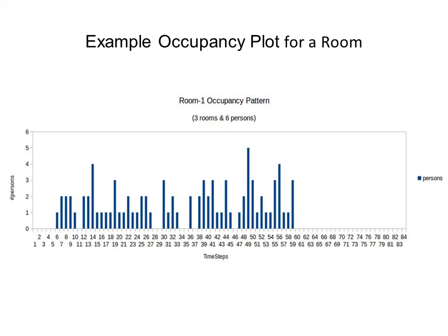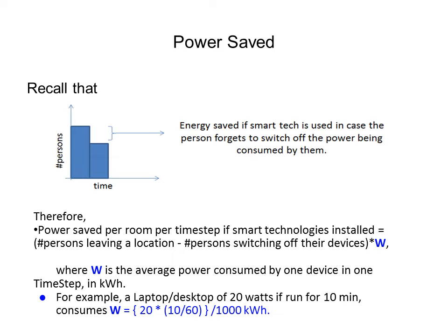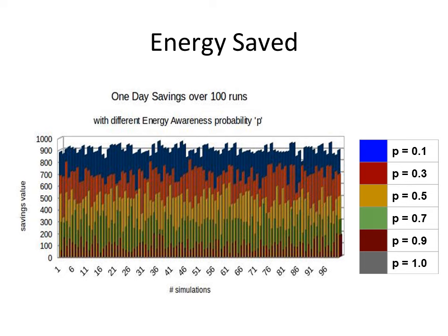Based on a particular run of the program, we obtained the room 1 occupancy profile, which shows the number of users present in that room at each instant of time. The gap denotes the number of persons leaving a room at a particular time step who forget to switch off their devices. The formula for power saved per room per time step when smart technology is installed equals the number of persons leaving a location minus the number switching off their devices, multiplied by w, where w is the average power consumed by one device in one time step.